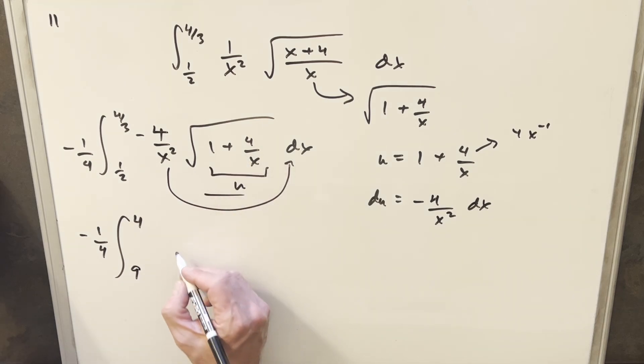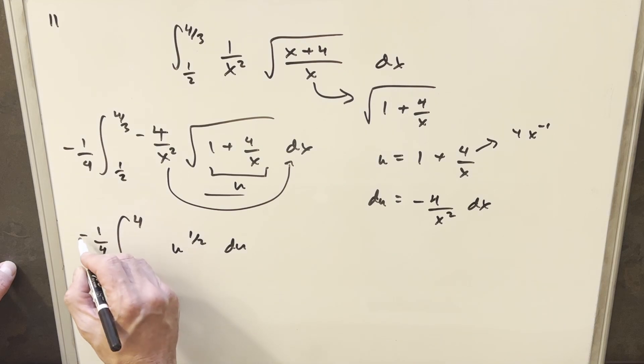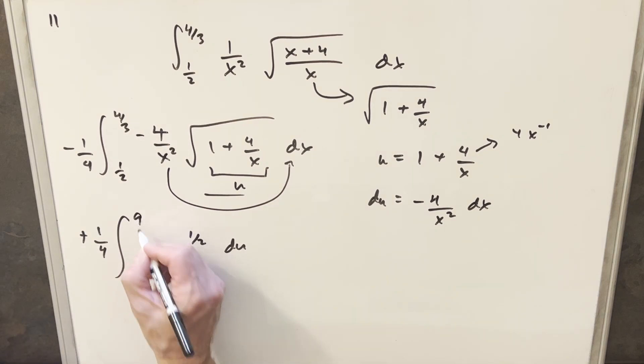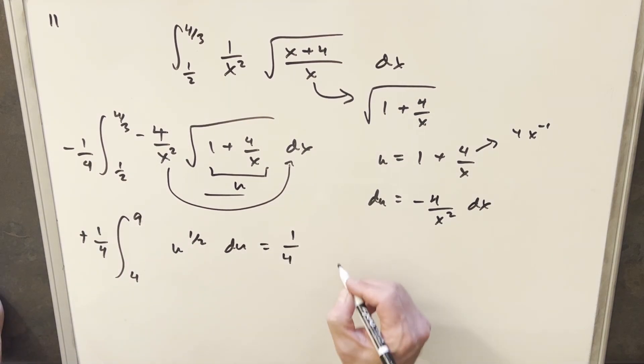Then here we're going to have just the square root of u, but I'm going to write that as u to the 1 half, just because I'm going to be doing power rule. And like I said, everything else is just du. And then I'm going to take this minus sign and use it to swap my bounds right here. So instead of going 9 to 4, we're going to go from 4 to 9. Then we'll just integrate this thing using power rule.